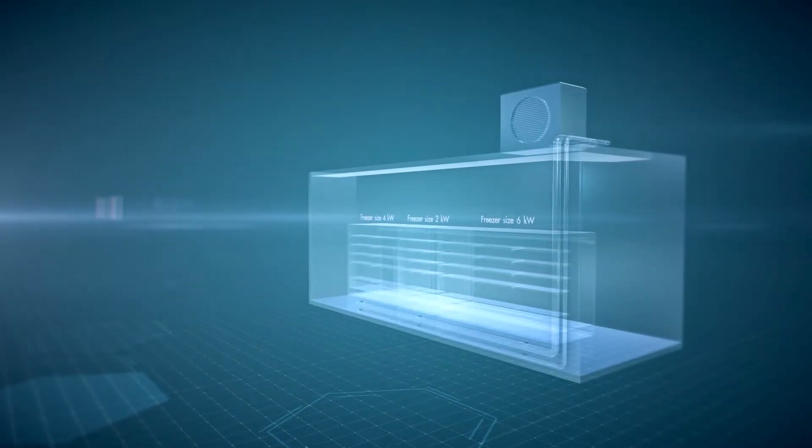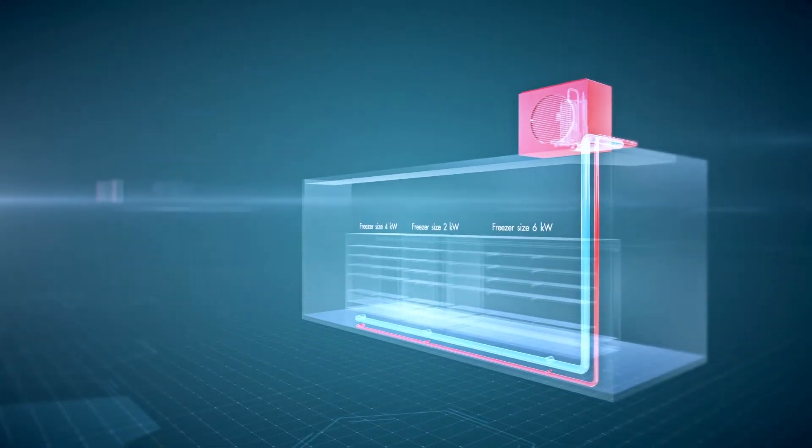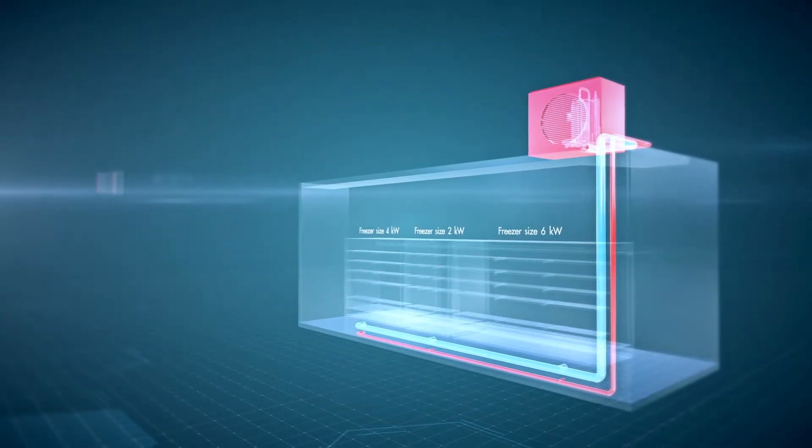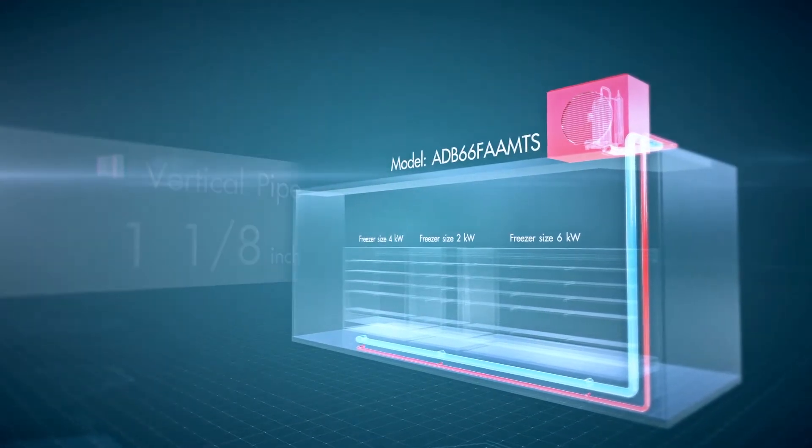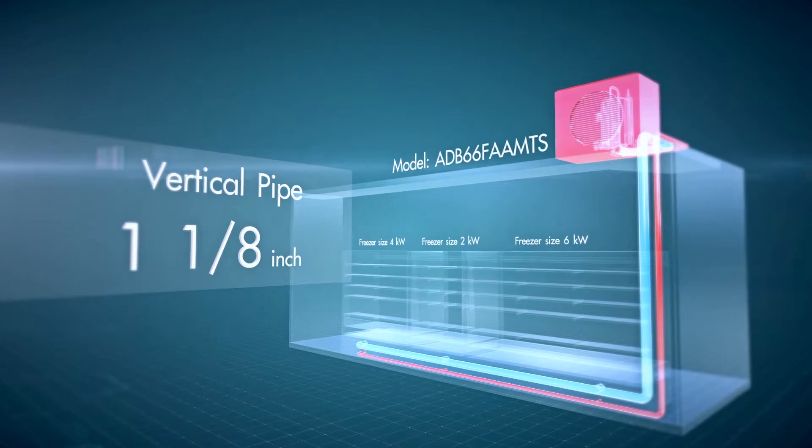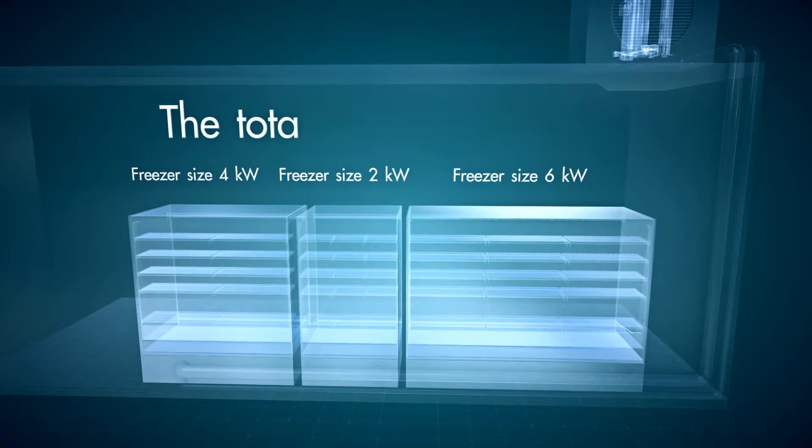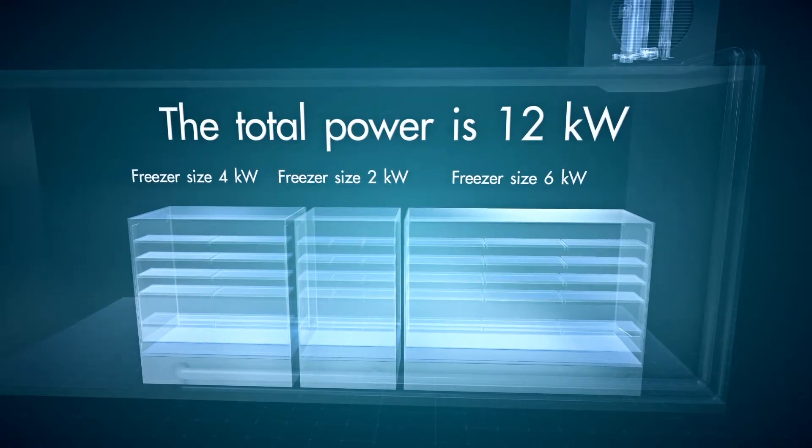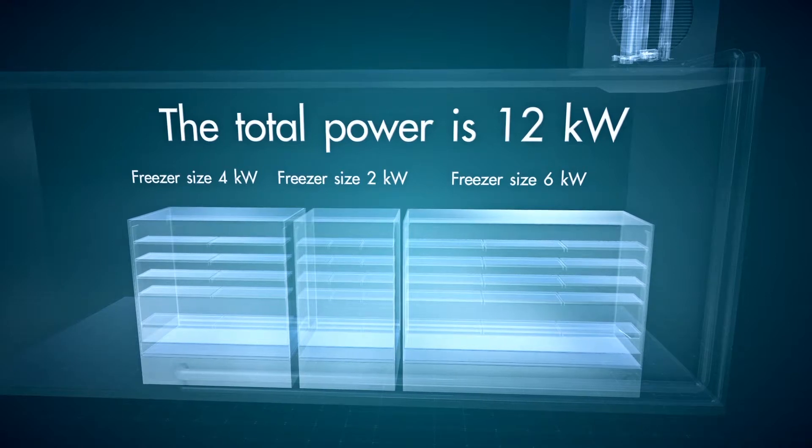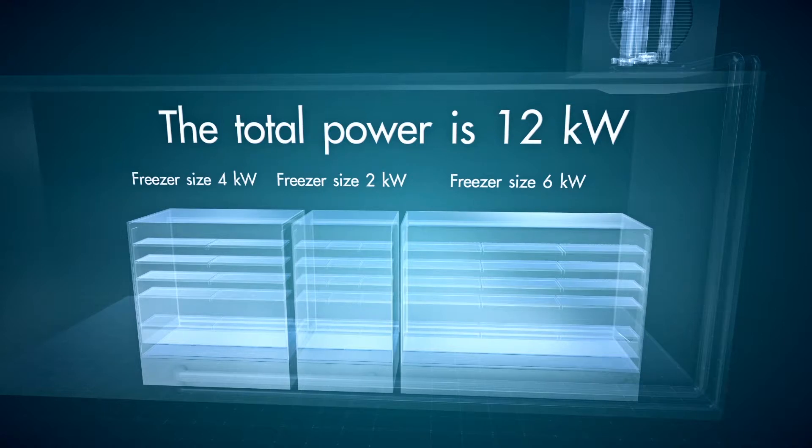The figure shows that to connect a 2.5 to 15.2 kW condenser to the compressor model ADB66FAA-MTS with vertical gas pipe, the size of the pipe would be 1⅛ inches in diameter with 100% flow rate. The figure also shows that the system can accommodate 3 refrigerating units, namely 4 kW, 2 kW, and 6 kW. Therefore, the total power is 12 kW.